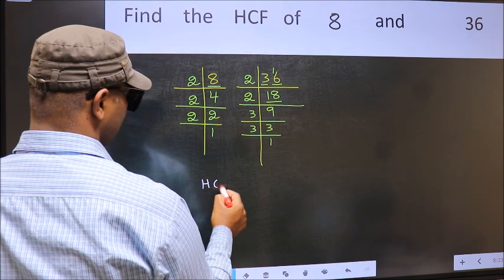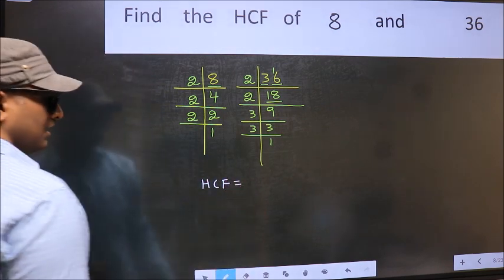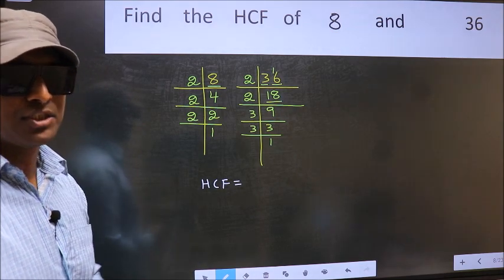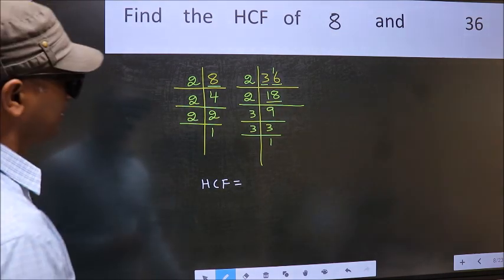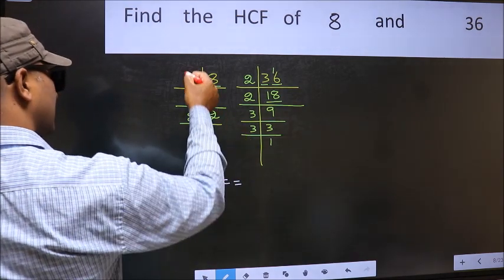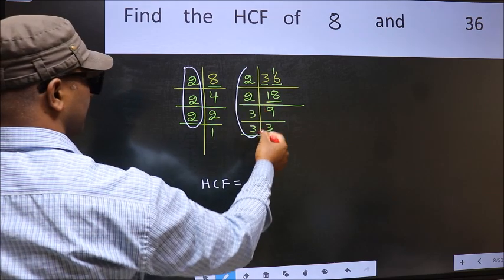Therefore our HCF is the product of the numbers which should be present in these two places, i.e. here and also here.